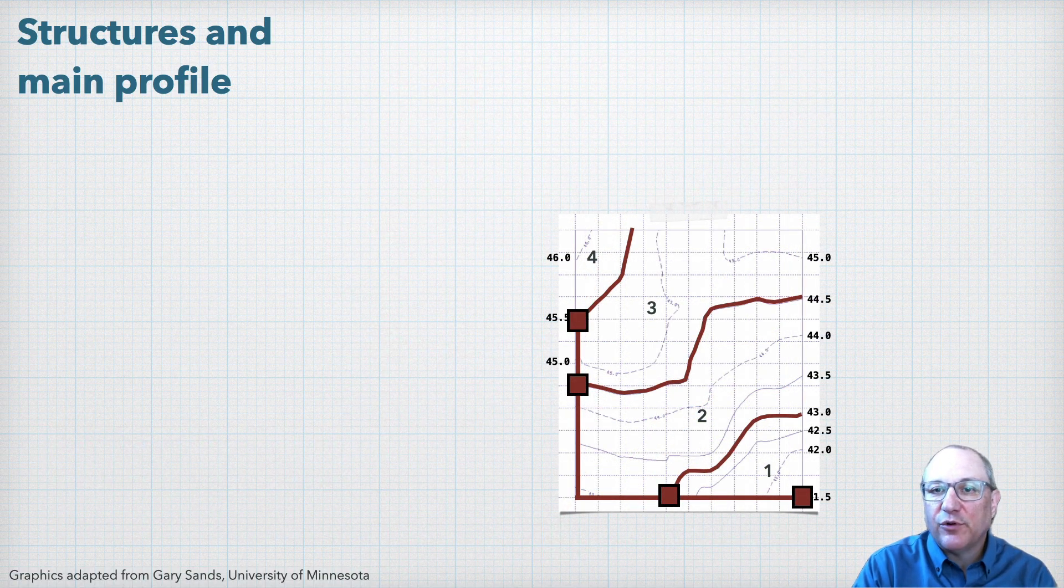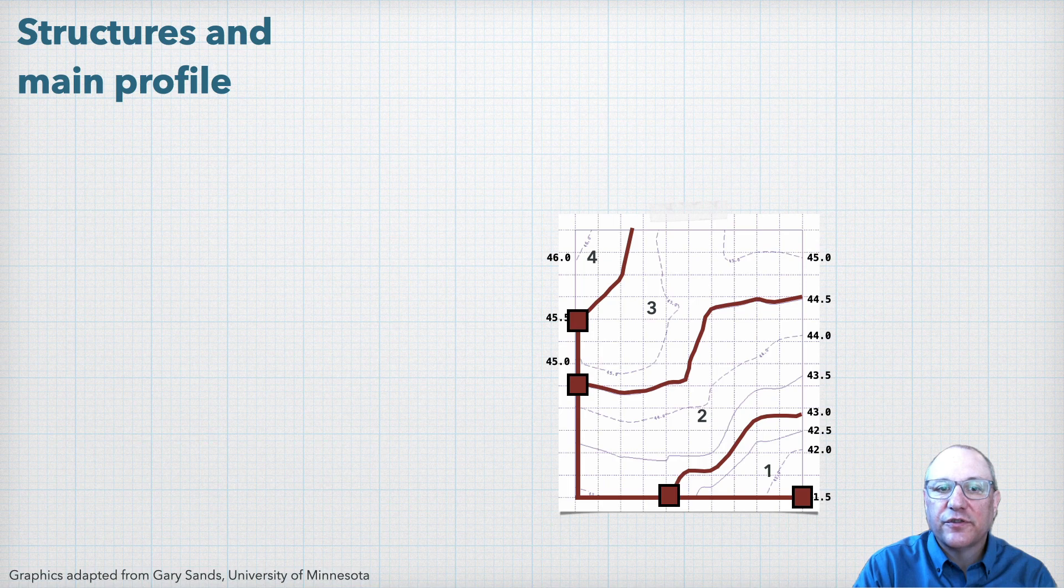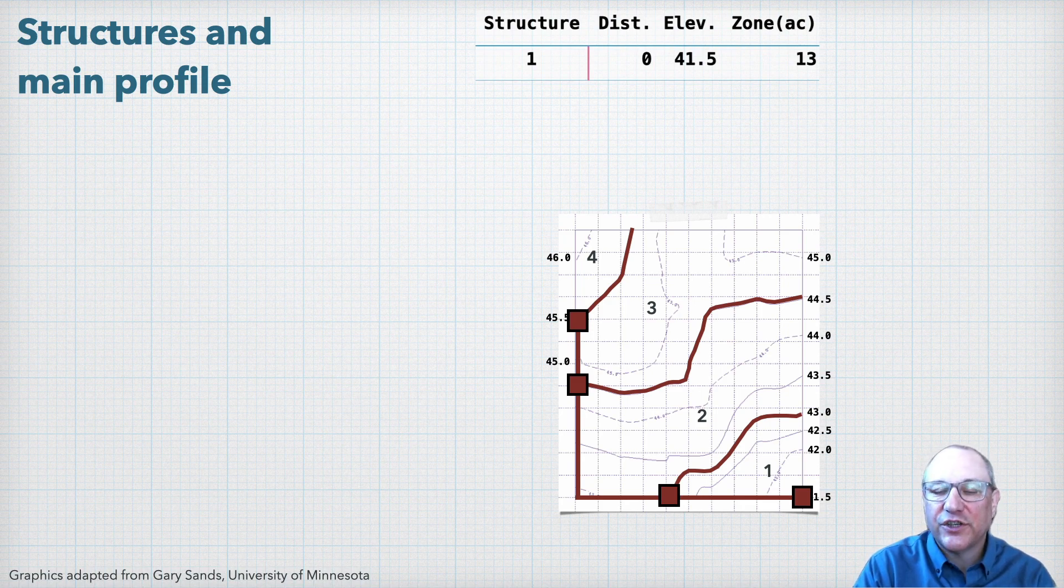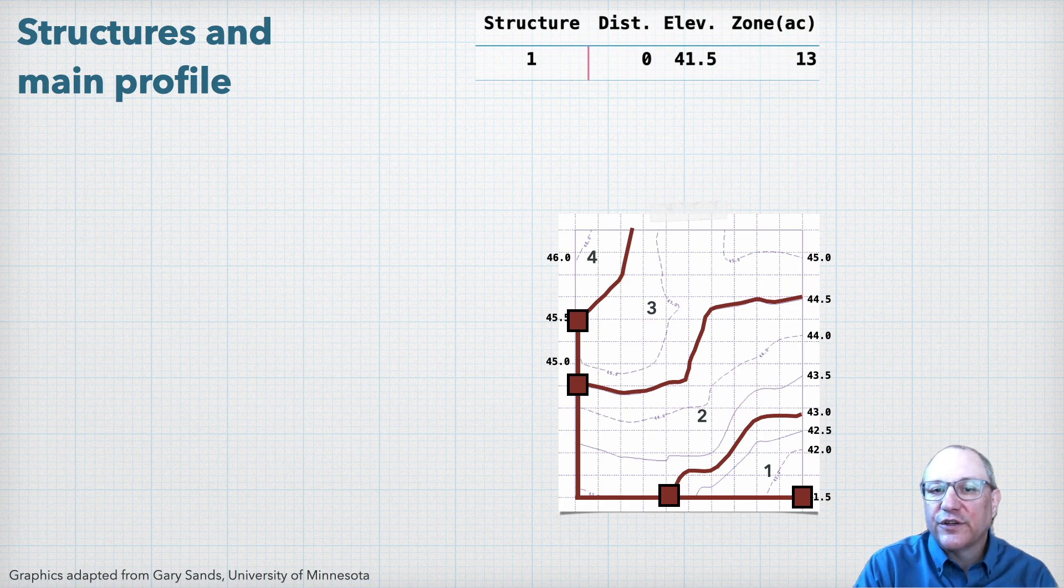So we can set up a table then for our control structures. The first control structure is at the field outlet, or zero distance from the outlet, at the 41.5-foot elevation. And using our grid, or in practice we'd get this from our design software or GIS software, the first control zone is 13 acres.